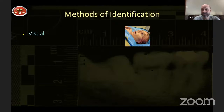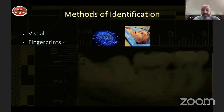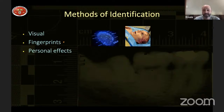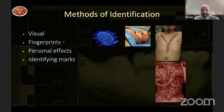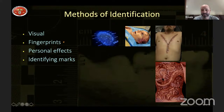What are some methods of identification? Visual identification can be done if remains are in good shape, comparing to photographs of the known person. Fingerprints are commonly used in the United States because many people are already in the database. Personal effects like a driver's license or clothing with a name can lead you to the victim. Identifying marks are also useful — tattoos, for instance, are very unique identifiers that we can compare to the remains.